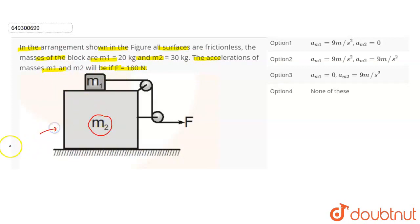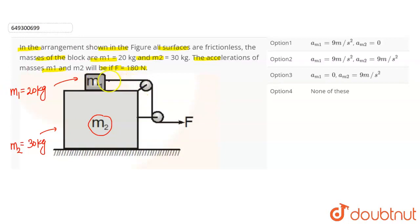The block m2 given is 30 kg, and block m1 is 20 kg. The m1 block is connected by a string that passes over two pulleys. These two pulleys are connected to a rigid support, which is block m2. This is a single string passed over two pulleys, with block m1 at one end. This string is at the end of both pulleys, and we need to calculate F.